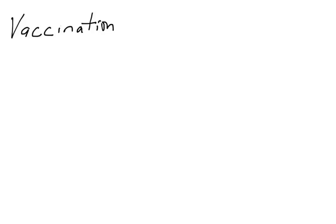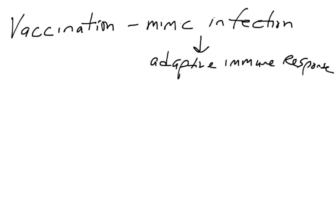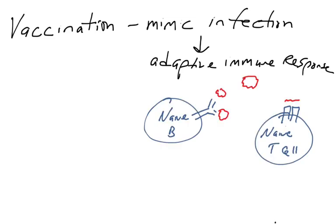Let's talk about vaccinations. The goal of a successful vaccine is to mimic an infection and provoke an adaptive immune response. The adaptive arms of the immune system involve B lymphocytes and T lymphocytes — those are the adaptive immune responses.